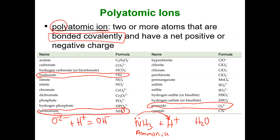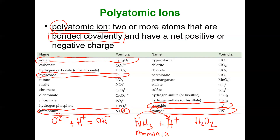Peroxide is also a common one — we saw it in an earlier video with hydrogen peroxide. That 'per-' prefix means one more oxygen, so H₂O would be hydrogen oxide (dihydrogen oxide), while H₂O₂ would be dihydrogen peroxide. Another really common one is cyanide — like 'took a cyanide pill' or hydrocyanic acid. And then there's acetate, found in acetic acid: after acetic acid donates its proton, it leaves behind the acetate ion. For these, you just have to memorize them.